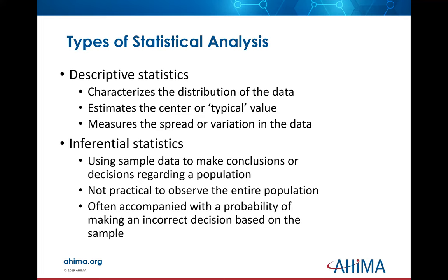Inferential statistics is basically taking a sample and making conclusions. For example, people on a medication like Humira — they say 50% of patients on Humira, it will stop being effective within 10 years. That's an inference based on a small sample size. These statistics have a probability of making an incorrect decision based on a sample — in other words, does our sample resemble the population at large? We'll talk more about that later in the course.